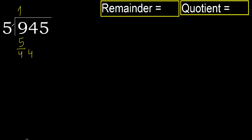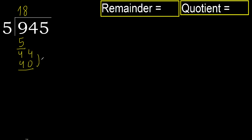44. 5 multiplied by 9 is greater. 5 multiplied by 8 is 40 — it is not greater. Subtract.